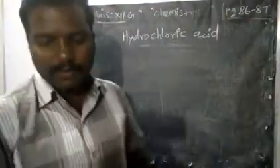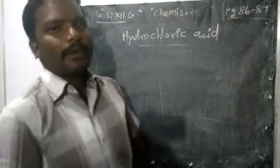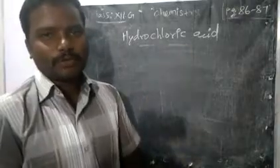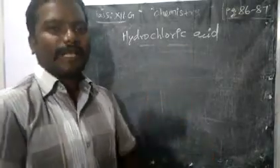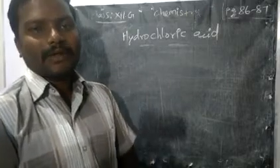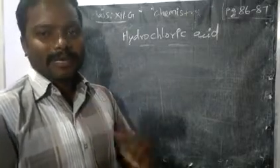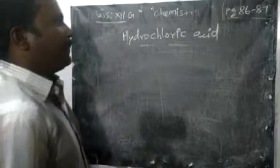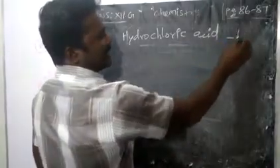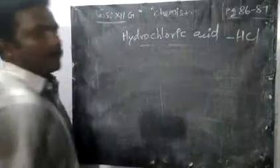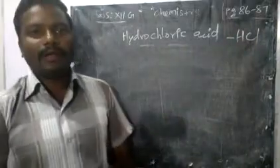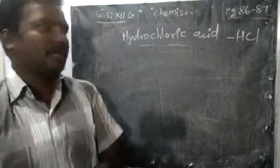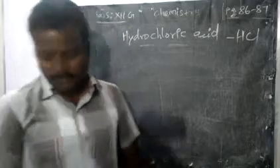Today we are going to study hydrochloric acid, a very important mineral acid. Hydrochloric acid, nitric acid, and sulfuric acid are called mineral acids, which are used in many processes, particularly in the laboratory. The molecular formula for hydrochloric acid is HCl. We will start by seeing the laboratory method of preparation of hydrochloric acid.